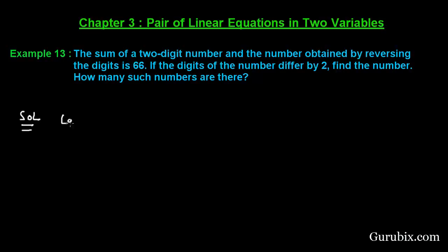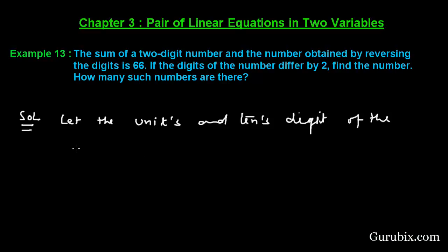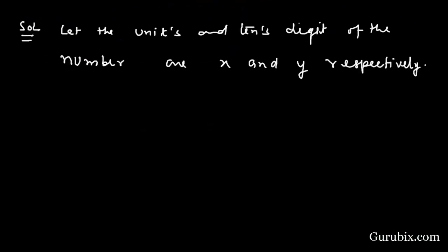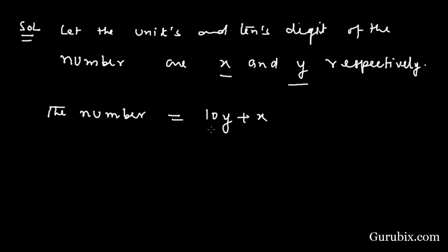First, we let the units digit and tens digit of the number be X and Y respectively. This means the unit digit is X and the tens digit is Y. Therefore the number can be written as 10Y plus X, because it is a two-digit number. This is the general form of a two-digit number. The number obtained by reversing the digits would then be 10X plus Y.